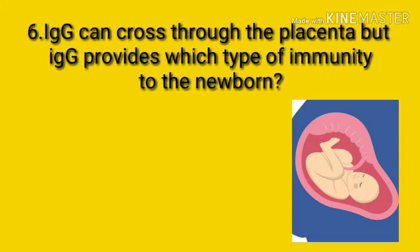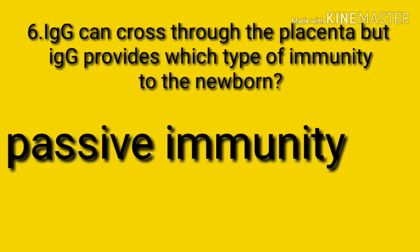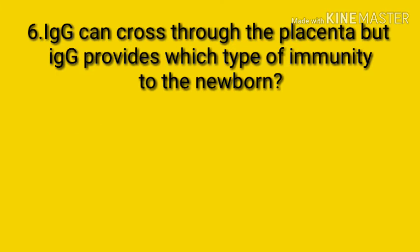Question number six: immunoglobulin G can pass through the placenta, but what type of immunity does IgG provide to the newborn? The answer is passive immunity. IgG provides passive immunity to the newborn.